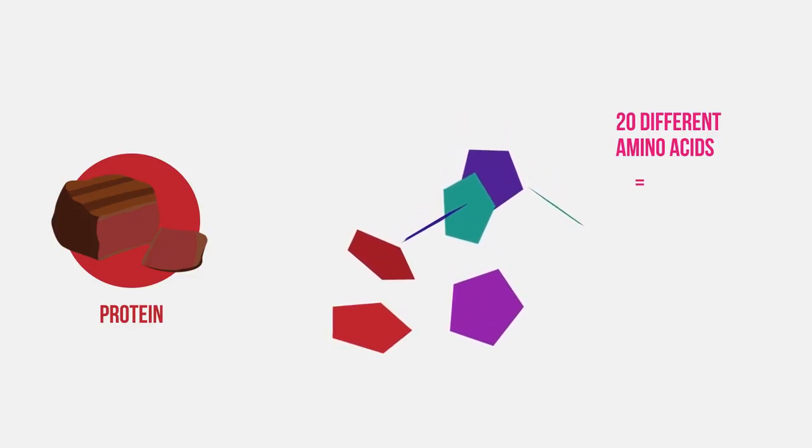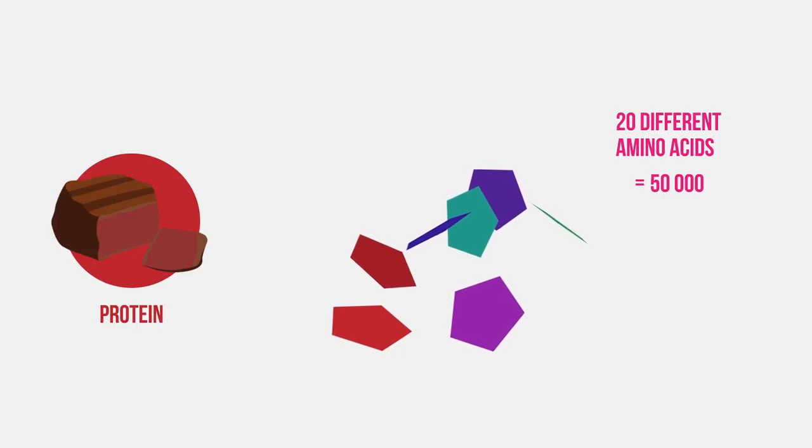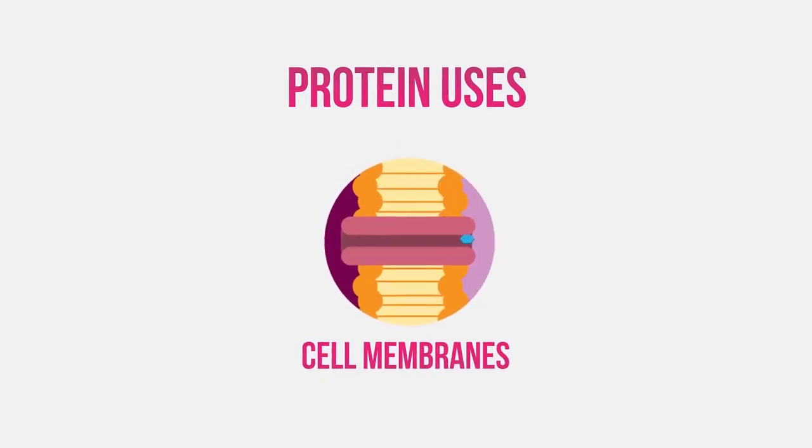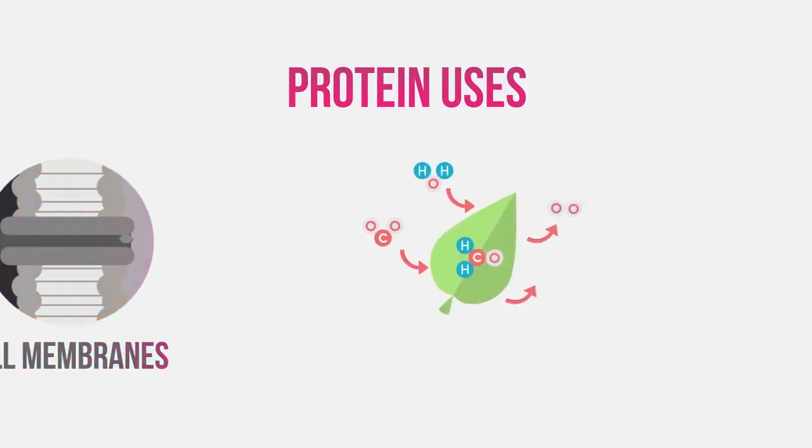It is estimated that there are about 50,000 different proteins in the human body alone. You will come across proteins nearly everywhere. For example, in cell membranes where they control the movement of substances during active transport, as enzymes